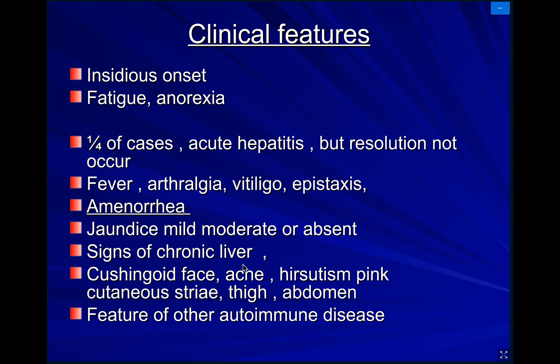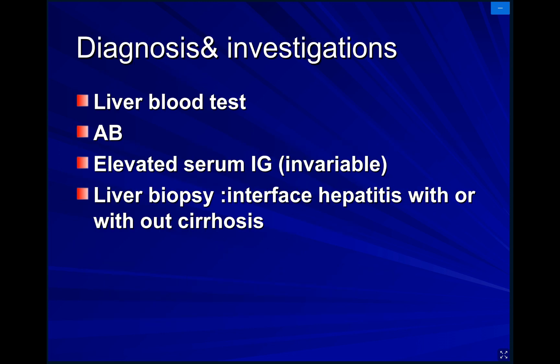There will be features of other autoimmune diseases. As we mentioned, maybe there is associated thyroid disease or associated Addison's disease. For investigations, we will send liver blood tests — ALT, AST, total serum bilirubin, direct and indirect. We will also send for antibodies: anti-nuclear and anti-smooth muscle.